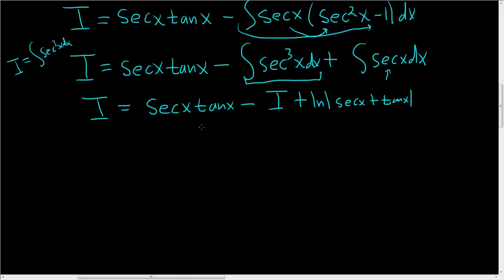To finish we'll add i to both sides. So if we add i to both sides, plus i cancels, plus i. We get 2i equals secant x tangent x plus the natural log of the absolute value of secant x plus tangent x.